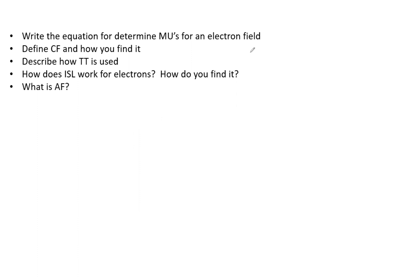Let's write the equation for determining MU for an electron field. We'll define CF and how you use it, describe how TT is used, how the inverse square law for electrons works, how to find it, and what AF is. A lot of this is based on the fact that you're supposed to know how to write the MU equation.